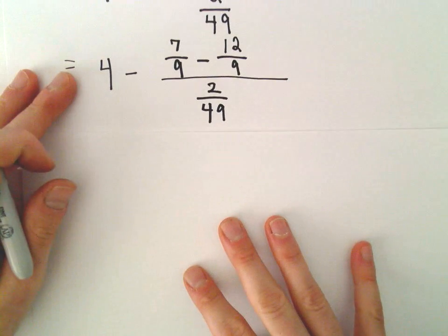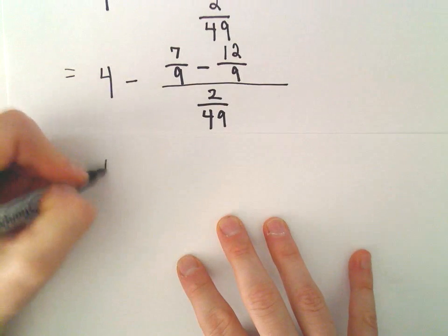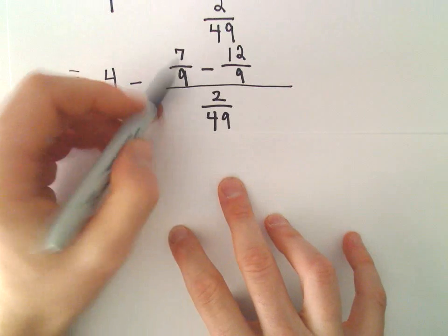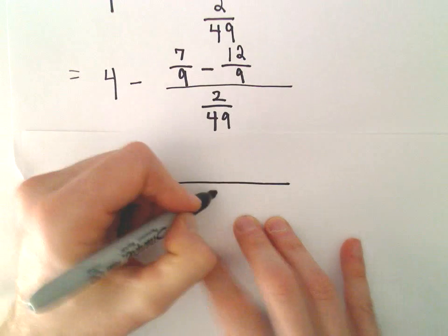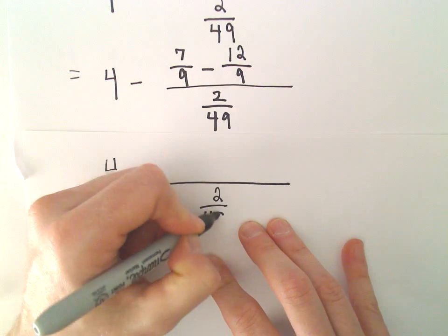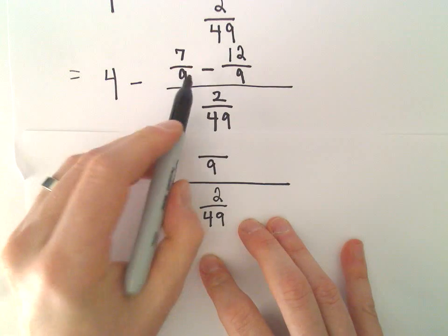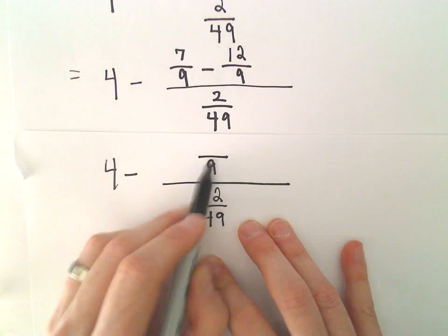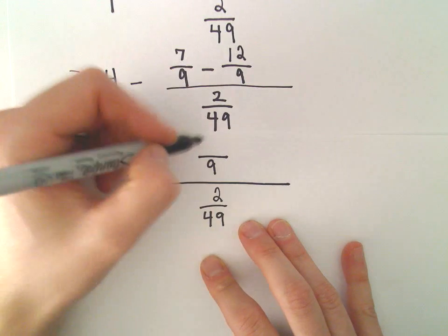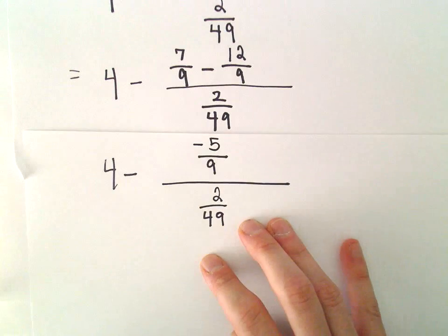I think we're getting a little bit closer here. So now we've got 4 minus, there's our 2 over 49 in the denominator. In the numerator, notice we would have our common denominator of 9. 7 minus 12, that would leave us with negative 5.